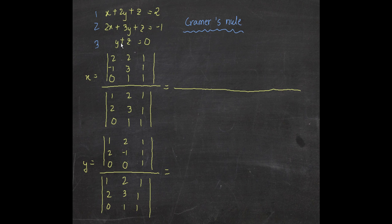That's why it's better to write the equations in a serial format like x plus 2y plus z — it makes it easier. If you wrote x plus z plus 2y it would be confusing. Similarly for y: the denominator stays the same, but in the numerator we replace the y-column with the values after the equal sign — before it was two, three, one, so now we write two, minus one, zero.